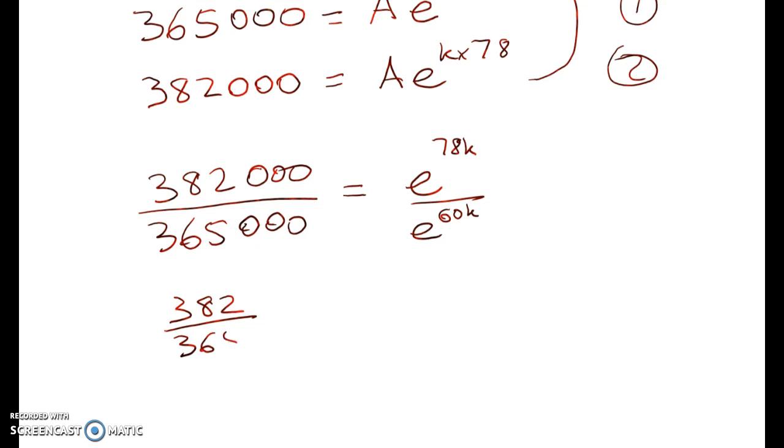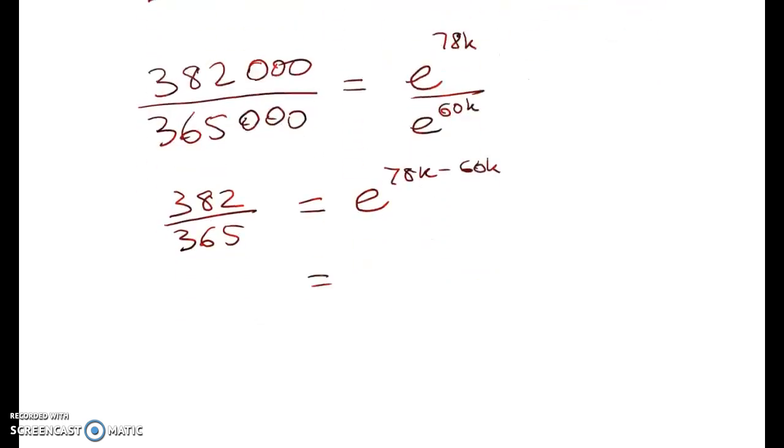So 382 over 365 is equal to e to the power of 78k minus 60k, which is e to the power of 18k.